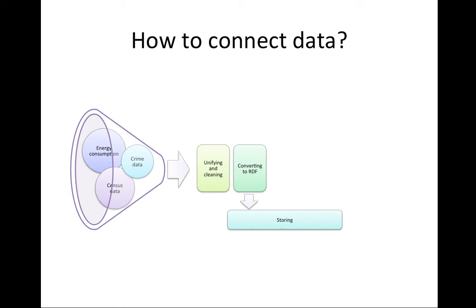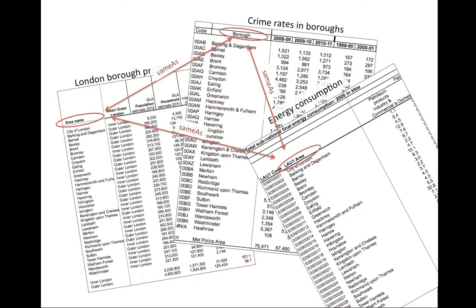When we will have all the data sets converted into RDF, we'll start linking them. We'll show you how to create links between particular RDF graphs. As we just showed you on a previous slide, we'll try to create links between particular names of London boroughs. To do so, we'll use Silk Link Discovery Framework.